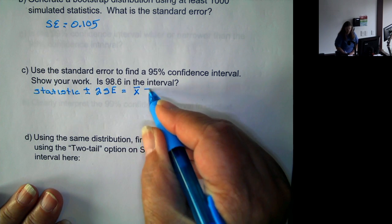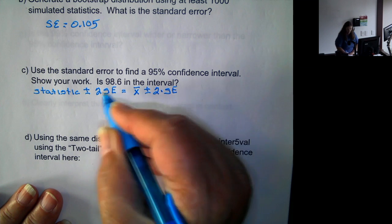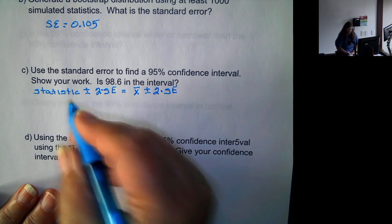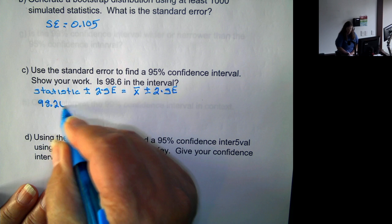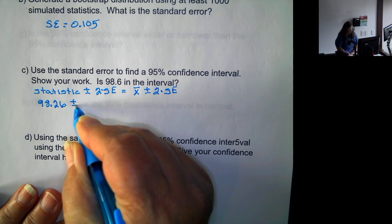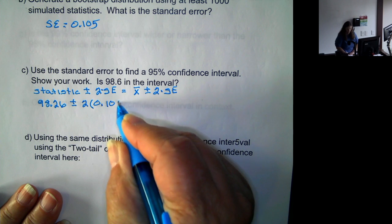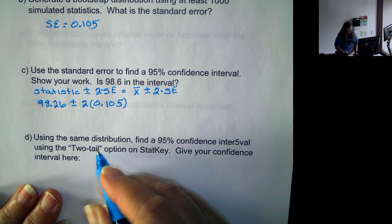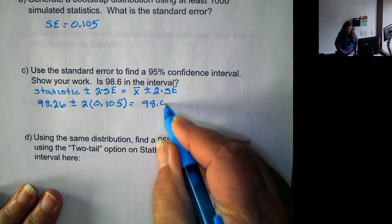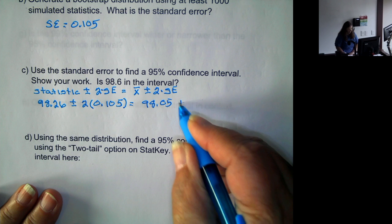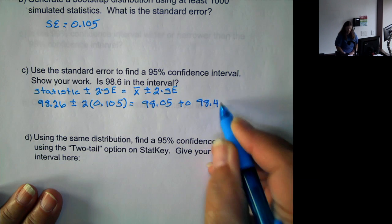So in this case, it's sample mean plus or minus 2 times the standard error. So the sample mean is 98.26 plus or minus 2 times 0.105, which gives us an interval of 98.05 to 98.47.